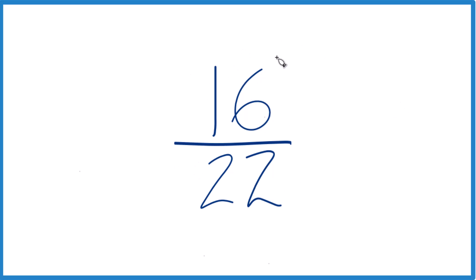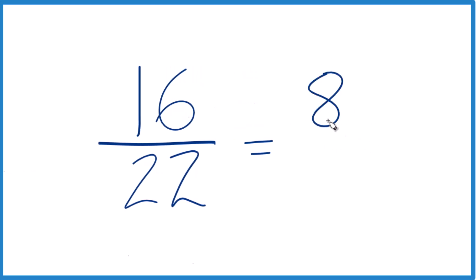When you have an even number in the numerator and the denominator, sometimes it's just easiest to divide the numerator by 2 and the denominator by 2. Just cut them in half. 16 divided by 2 is 8, and then 22 divided by 2 is 11.